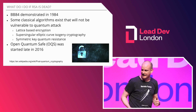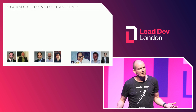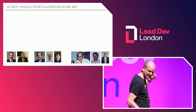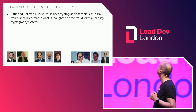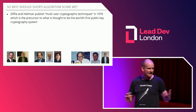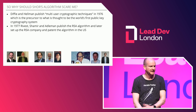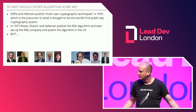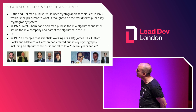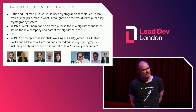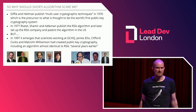Why should Shor's algorithm scare me? Here's a little history lesson. Diffie and Hellman published their seminal paper in 1976 — the first known instance of publishing a public key exchange. The RSA algorithm was born in 1977 — Rivest, Shamir and Edelman. But in 1997 it emerged that the British government had RSA and public key exchange cryptography some years before those two papers were published. Of course, they didn't tell anybody in the world.